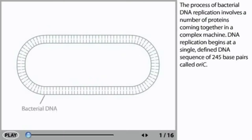The process of bacterial DNA replication involves a number of proteins coming together in a complex machine. DNA replication begins at a single defined DNA sequence of 245 base pairs called oriC.